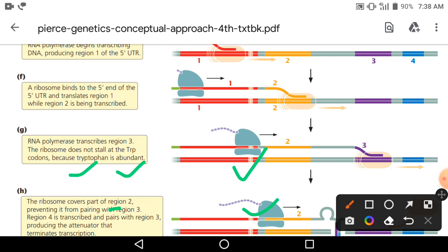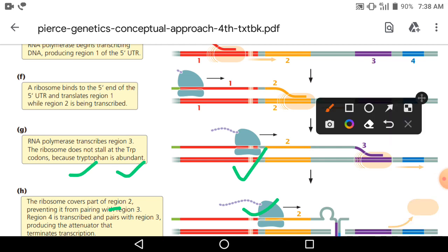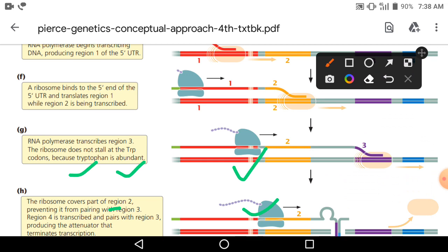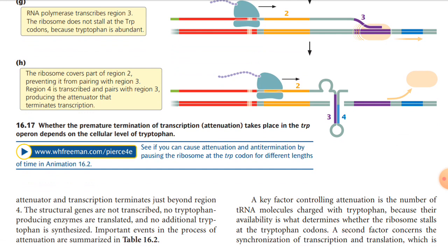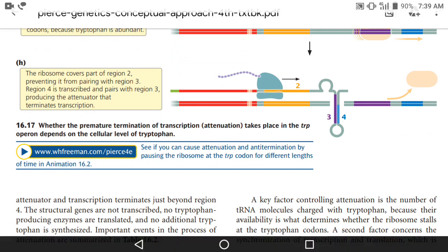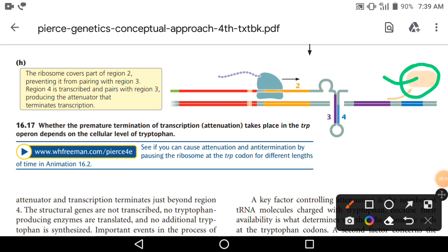The ribosome covers part of region 2, preventing it from pairing with region 3. Ribosome second region पर चला जाता है और region 2 को cover कर लेता है। इस वजह से region 2, region 3 के साथ hairpin formation नहीं कर पाता। तो region 3 और region 4 transcribe होने के बाद आपस में complementary होकर एक-दूसरे के साथ hairpin formation कर लेते हैं।